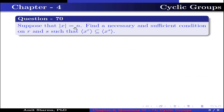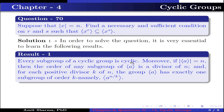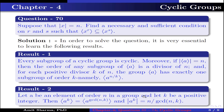Question number 70: suppose order of x is n. Find necessary and sufficient condition on r and s such that the group generated by x^r is contained in the group generated by x^s. To solve this, it is essential to know the following results. Result 1: every subgroup of a cyclic group is cyclic. If order of the group generated by a is n, then order of any subgroup divides n, and for each positive divisor k of n, the group has exactly one subgroup of order k, generated by a^(n/k). Result 2: let a be any element of order n; then the group generated by a^k equals the group generated by a^(gcd(n,k)), and order of a^k equals n divided by gcd(n,k).